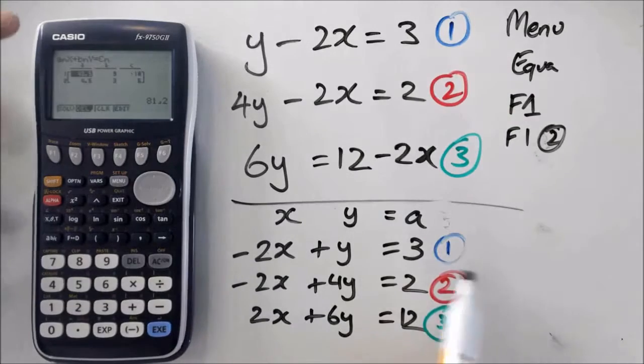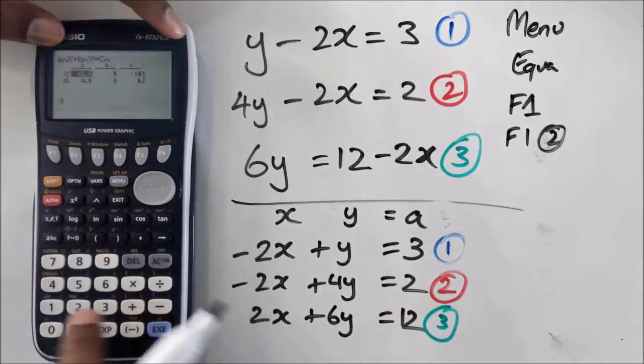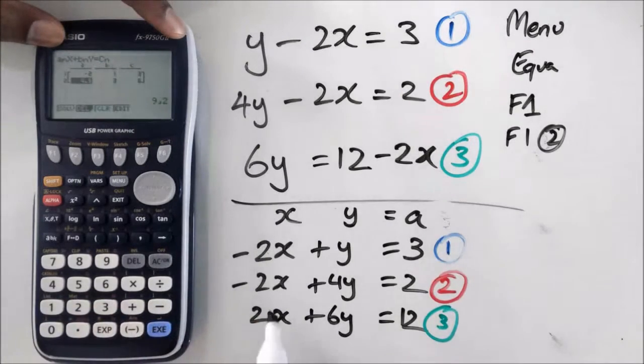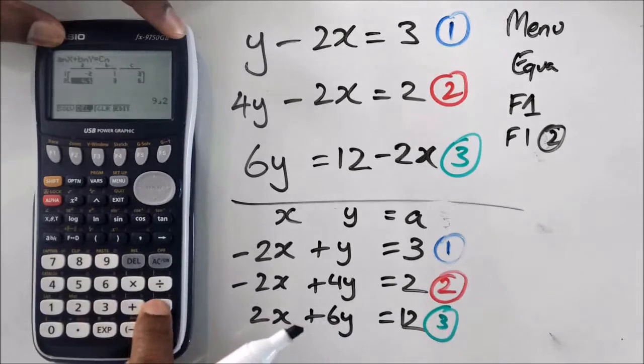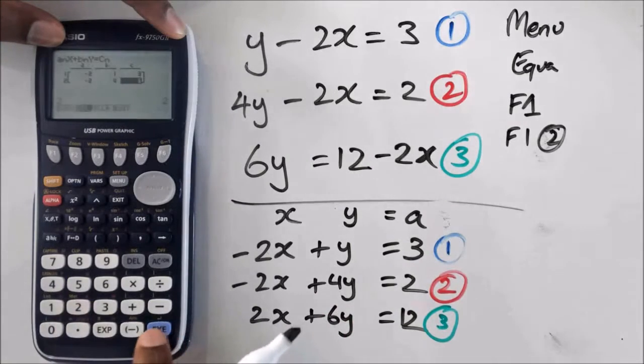So I'm going to do equation 1 and 2 first. So equation 1 and 2, I've got the coefficients which is negative 2, positive 1, positive 3. Then my second equation, I've got negative 2, 4 as the coefficient of y, and 2 as the last constant.